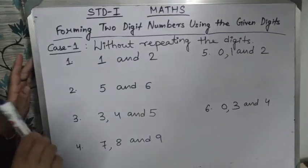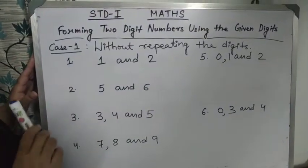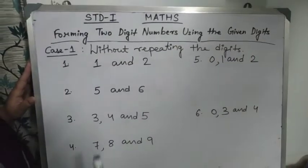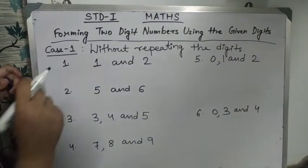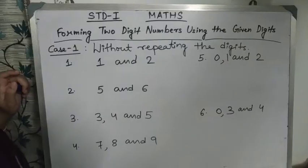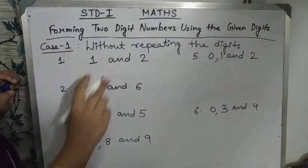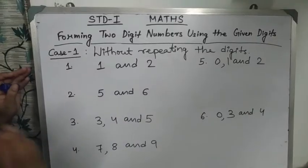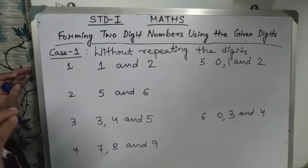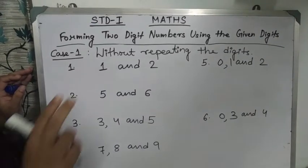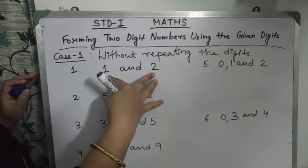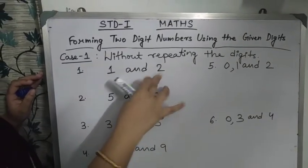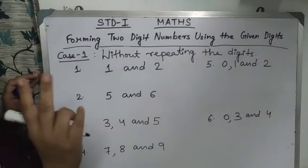First we will start with Case 1, that is without repeating the digits. See number 1 — two digits are given: 1 and 2. You have to form two-digit numbers with these two digits.